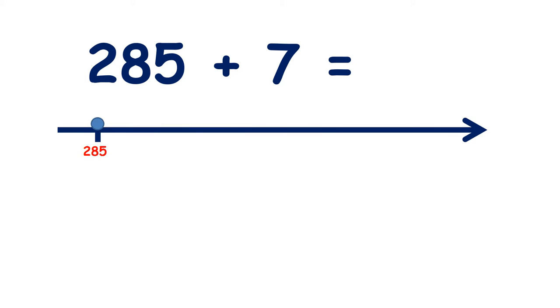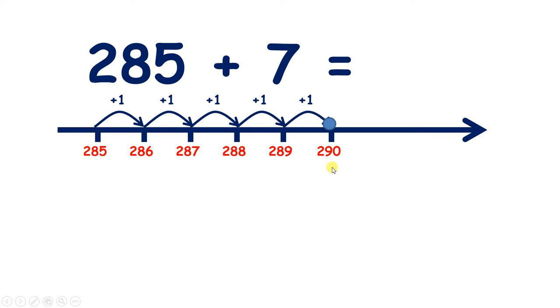Now pause the video and see if you can answer 285 plus 7. So if we count on 7 from 285, we get 286, 287, 288, 289, 290, 291, 292. So we've added 7 to get 292.